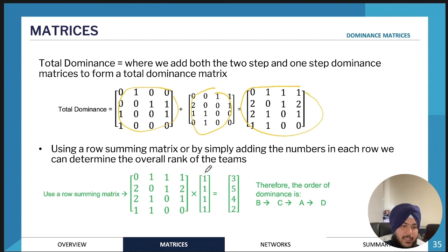The way we do it is by adding the numbers in each row. Here we have a three, a five, a four, and a two. Once we've added all the numbers in the rows, we find out the order. B has a five, so B has the total dominance or has bet the most number of teams. That's how you would find the overall winner.